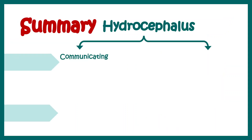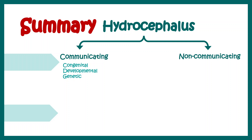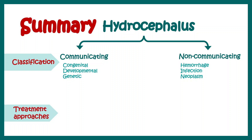In summary, there are two major types of hydrocephalus: communicating and non-communicating. Communicating hydrocephalus can be caused by hemorrhage, infection, or neoplasm, while non-communicating hydrocephalus can arise from congenital, developmental, and genetic factors. Treatment with a shunt is generally sufficient, but non-communicating hydrocephalus may require other options such as endoscopic ventriculostomy or ablation of the choroid plexus to reduce CSF production.